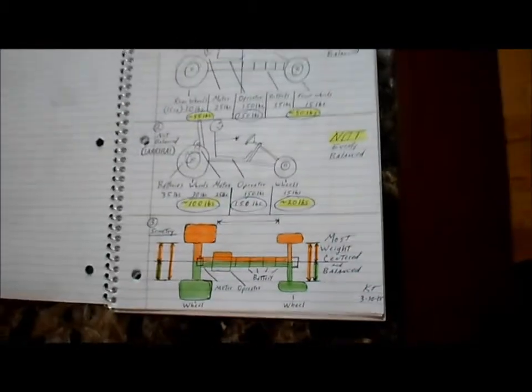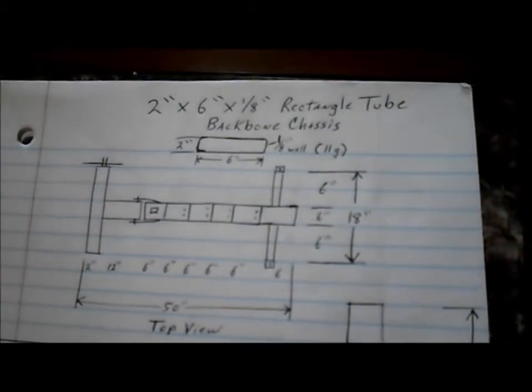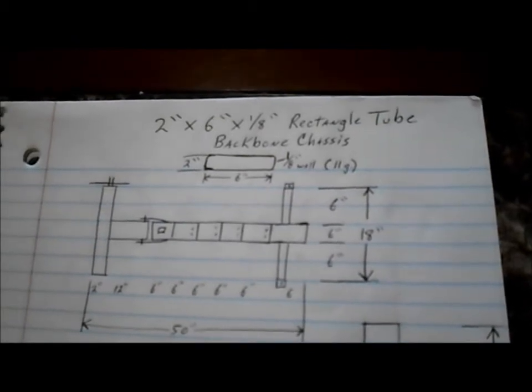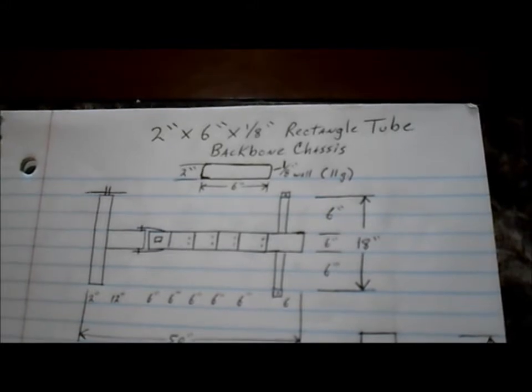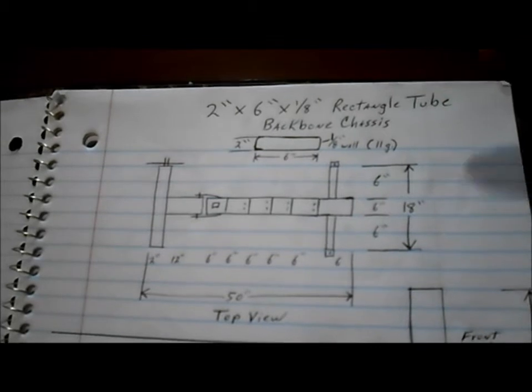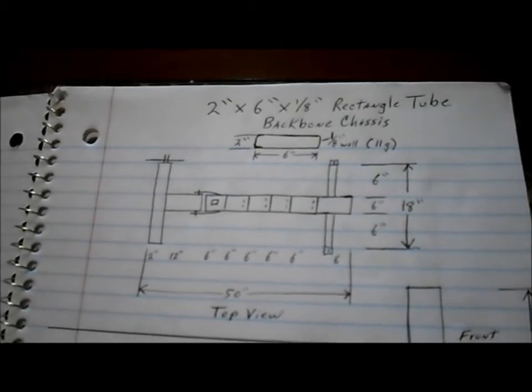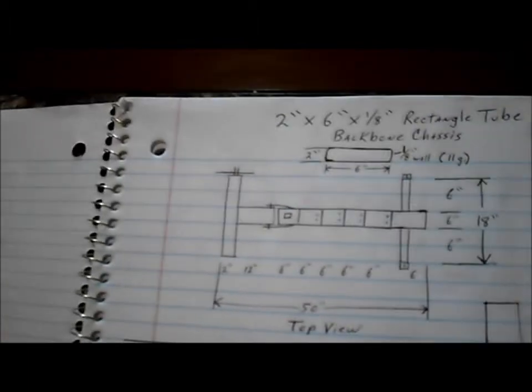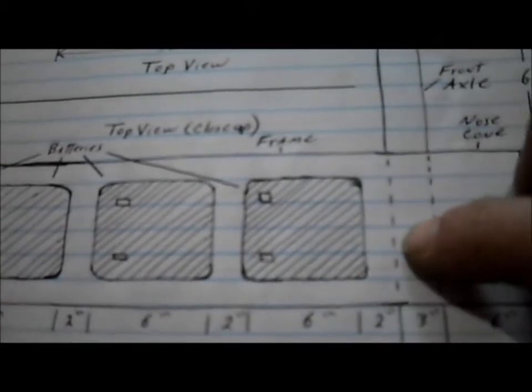So basically here's what we're going to work with. I'm going to use two inch by six inch rectangular tube that's got an eighth inch thick wall or about 11 gauge. I thought about using four by four square tubing, but the batteries are about four inches wide and they wouldn't fit inside the tube. So I think this will even work out better because the batteries being four inches wide but the tube being six inches wide will still have about an inch wraparound to help maintain strength.